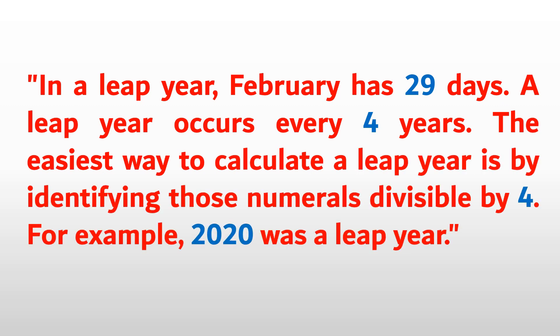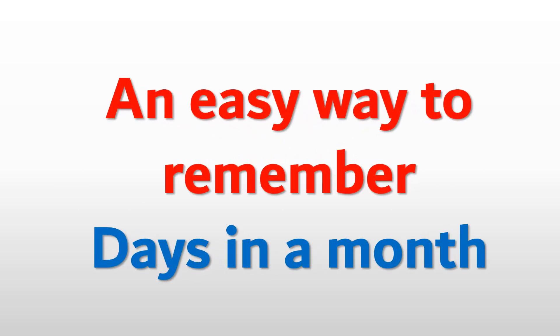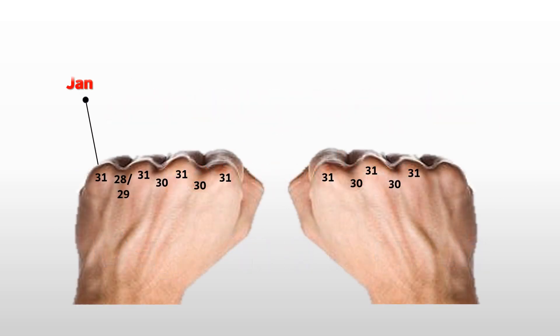In a leap year, February has 29 days. A leap year occurs every four years. The easiest way to calculate a leap year is by identifying those numerals divisible by four. For example, 2020 was a leap year. An easy way to remember days in a month: 31 days in January, 28 or 29 days in February, 31 days in March.